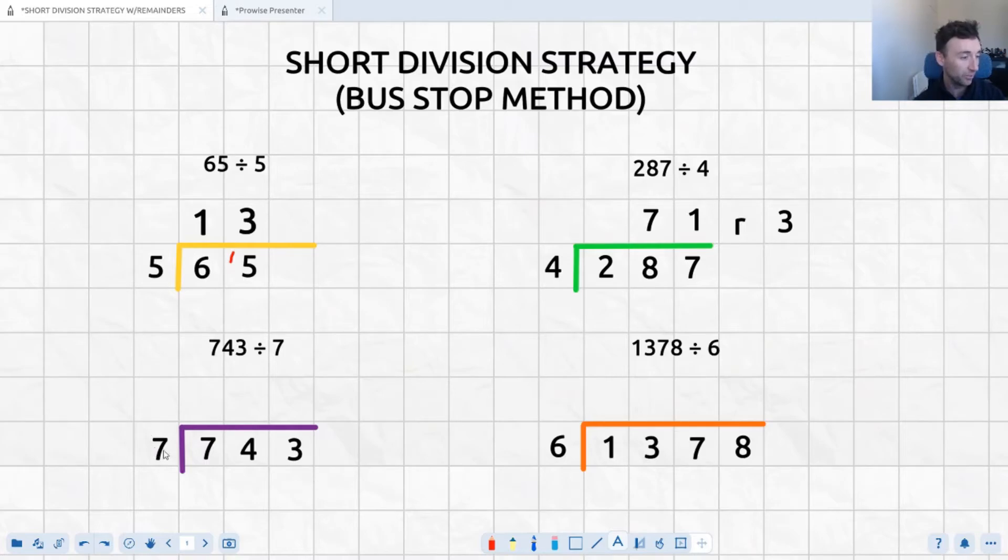Let's move on to the purple example. So 7 goes into 7 one time. 7 does not go into 4. Okay, but 7 does go into 43. Now I know my 7 times tables really well. 7 goes into 43, and make sure you put a 0 there. 7 does not go into 4, so 0 times there. 7 goes into 43 six times. 6 times 7 is 42, which means we do have a remainder, and that remainder is a remainder of 1 there. So 106 remainder 1.